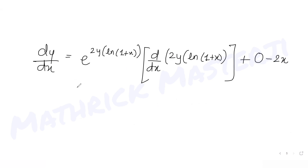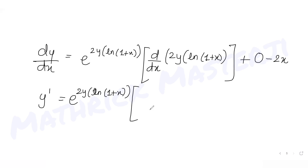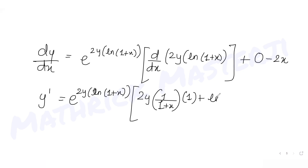So dy/dx equals y' = e^(2y·ln(1+x)) times the product rule on 2y·ln(1+x). Applying the product rule: 2y · (1/(1+x)) · 1 plus ln(1+x) · 2y', minus 2x. So you have that entire expression now.